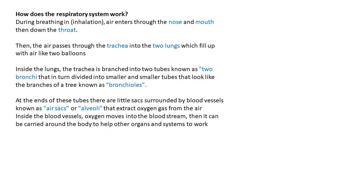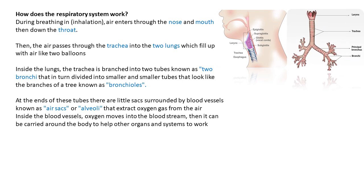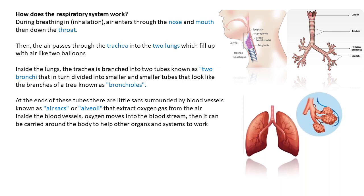During inhalation, air enters through the nose and mouth, then down the throat. The air passes through the trachea into the two lungs, which fill up with air like two balloons. Inside the lungs, the trachea is branched into two tubes known as two bronchi. At the end of these tubes there are little sacs surrounded by blood vessels known as air sacs or alveoli, which extract oxygen gas from the air into the blood vessels. Oxygen moves into the bloodstream and is carried around the body to help other organs and systems to work.